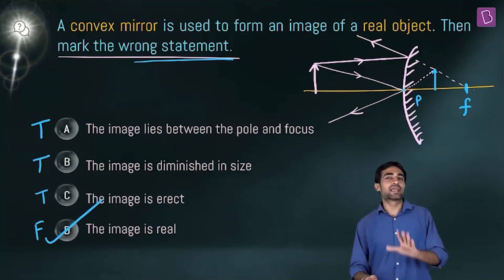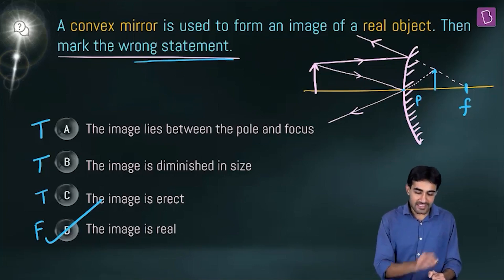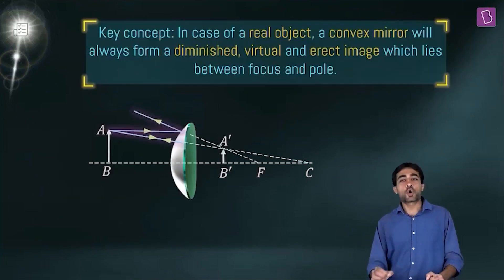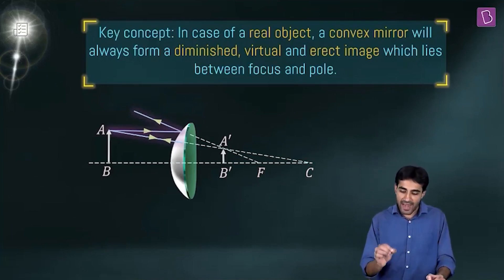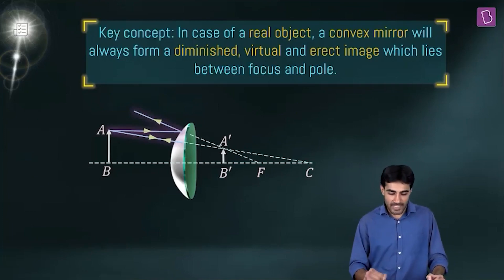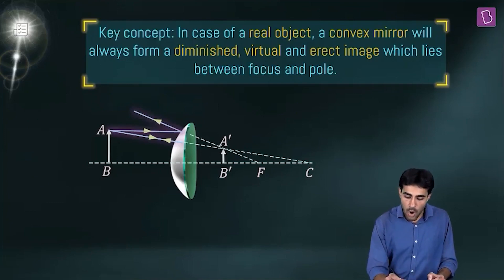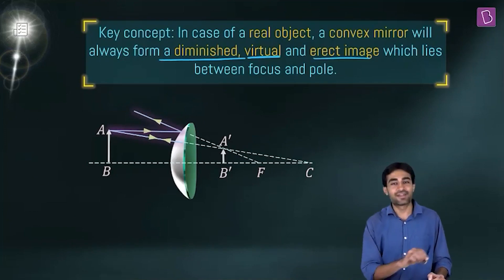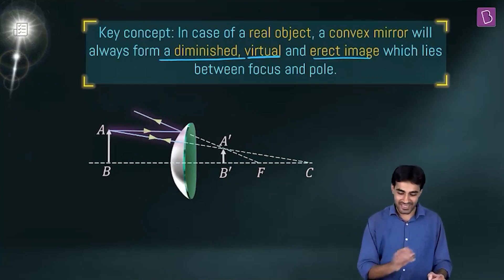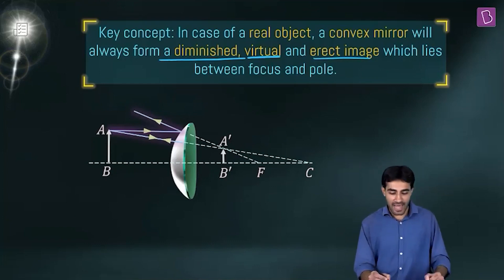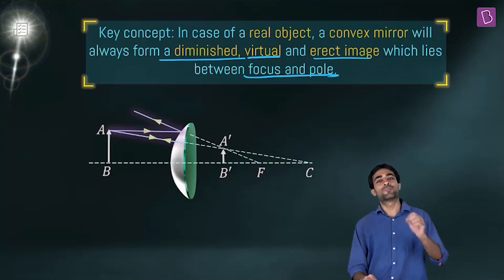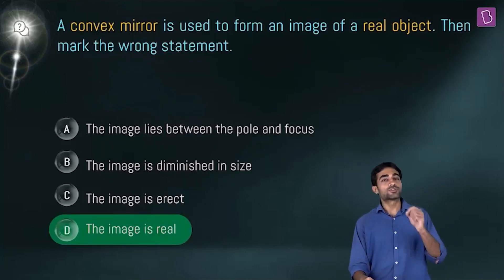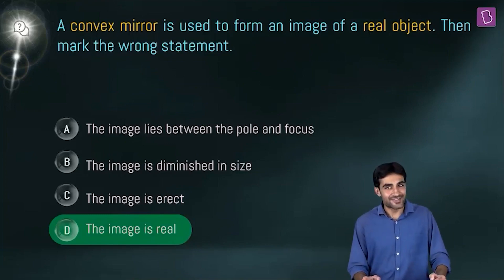The key concept to remember here: in the case of a real object and a convex mirror, the image will always be diminished, virtual, and erect, and it will lie between the focus and the pole. So for this question we pick option D as the answer.